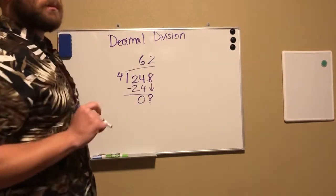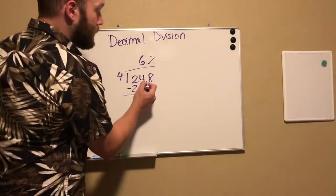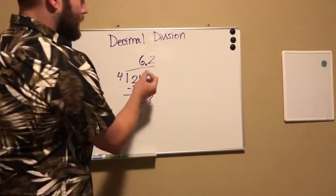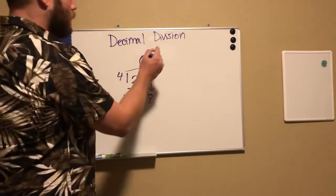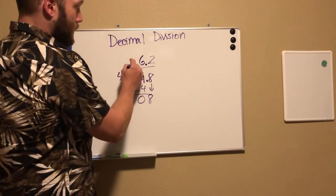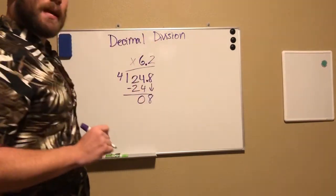Now notice what I forgot to do that I said we should have done before: we put the decimal in our answer before we do it because it needs to go directly above where it is in the equation. We can't move it around. So we move to 6.2 as our answer.